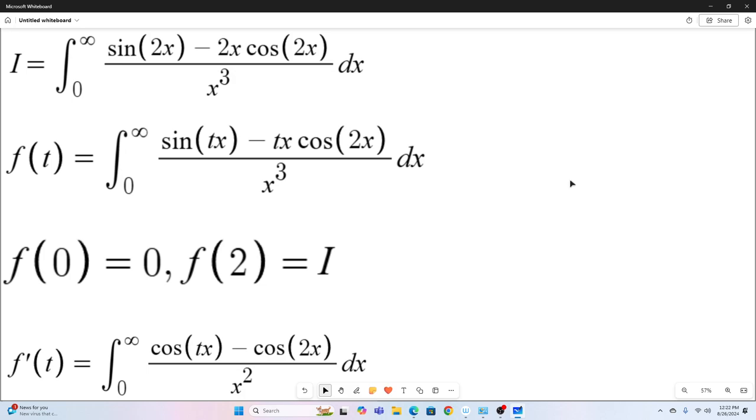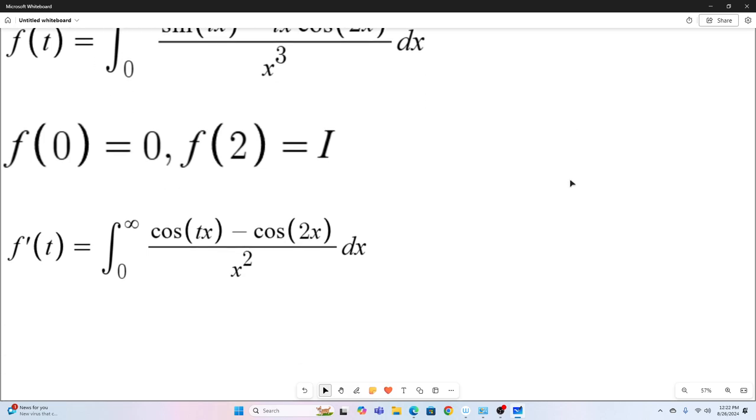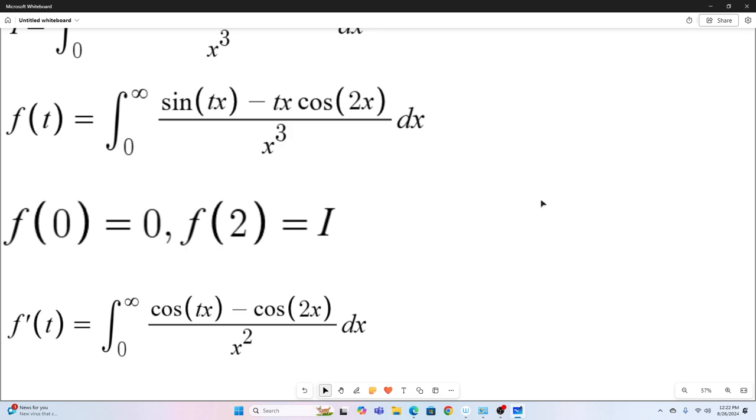Now, we differentiate. So this is what you get if you differentiate F of T with respect to T. All you do, the Leibniz rule says all you have to do is take the partial with respect to T of that integrand, the inner function on the integral, with respect to T, and leave the rest alone.